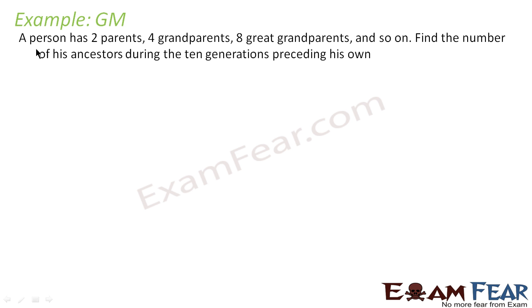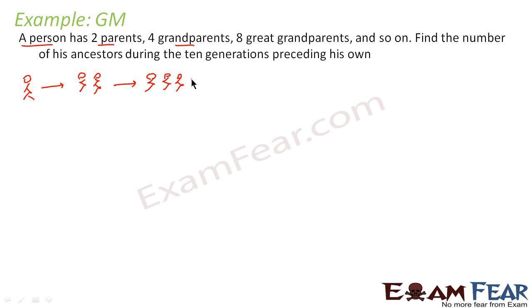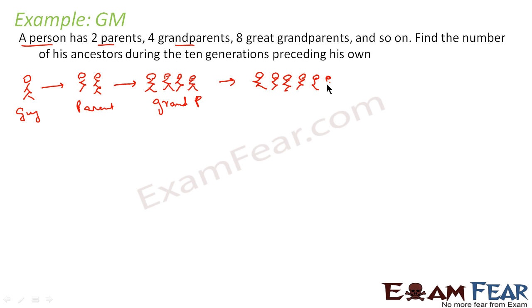In this question, it says that a person has two parents, four grandparents, eight great-grandparents, and so on. Find the number of ancestors during the 10th generation. So this guy has two parents, four grandparents, and then eight great-grandparents — one, two, three, four, five, six, seven, eight.